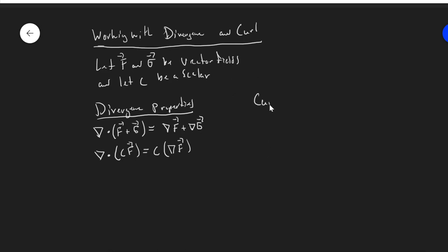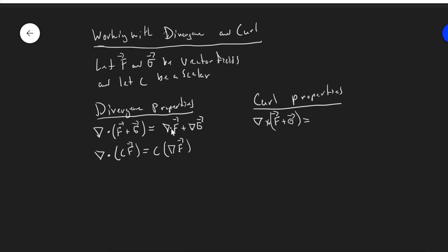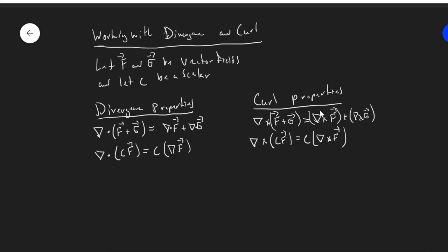We can also see some curl properties as well, establishing the linearity of the del operator for curl. Del cross (F plus G) — I take F plus G, get another vector field, and find the curl of that — turns out to be the sum of the curls: del cross F plus del cross G. And for scalars, del cross a scaled version of my vector field is the scaled curl: C times del cross F. So it behaves nicely; it splits up over sums, and you can pull out scalar multiples.